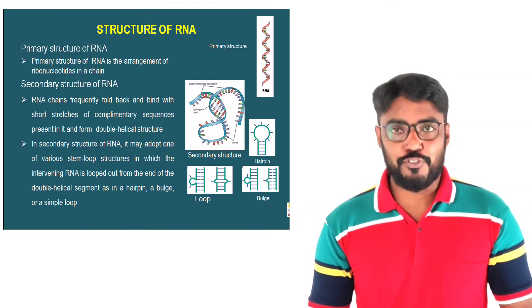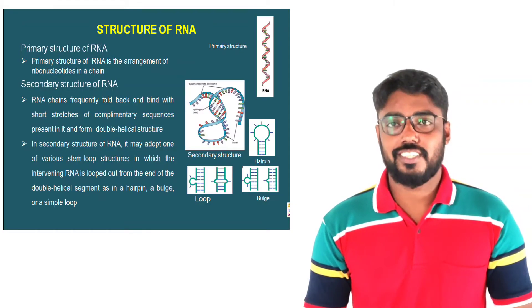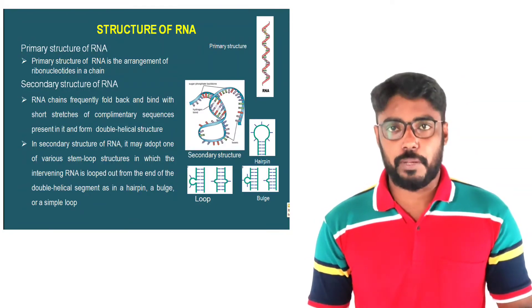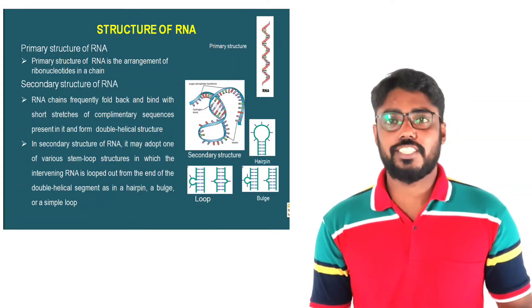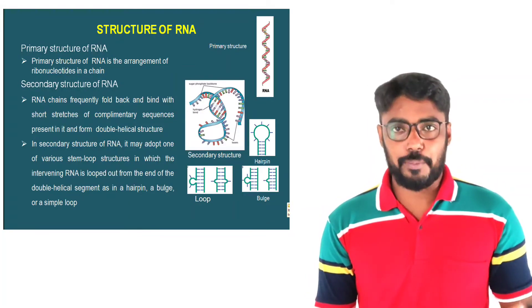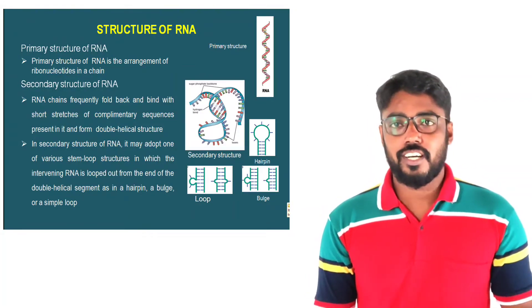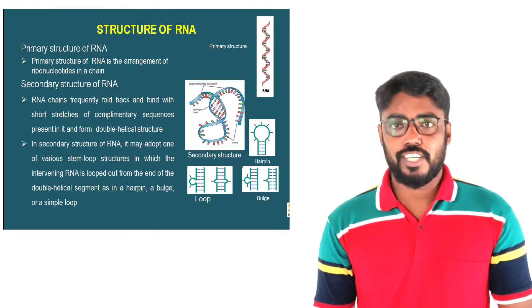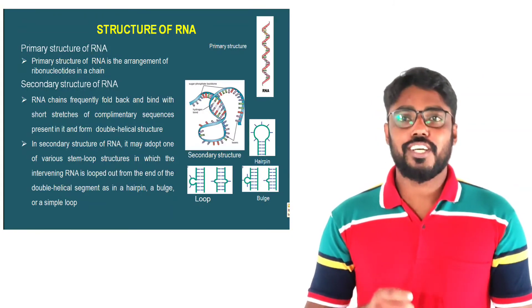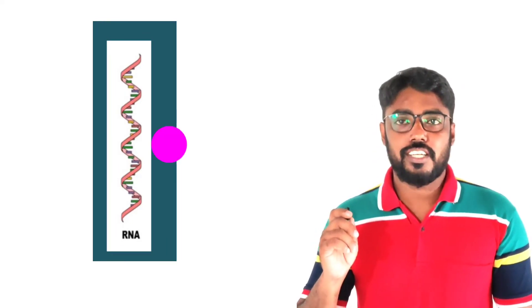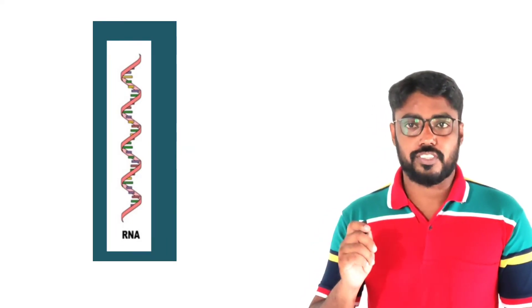Now let us see the structure of RNA. RNA has mainly three structures: primary structure, secondary structure, and tertiary structure. In the primary structure, the ribonucleotides are arranged in a chain — that is known as the primary structure, as you can see in this figure.